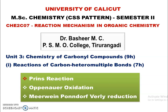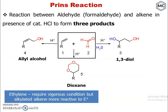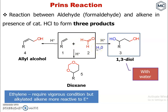The reactions covered are the Prins reaction, Oppenauer oxidation, and MPV reduction. The Prins reaction is a reaction between an aldehyde — specifically formaldehyde — and an alkene in the presence of a catalytic amount of hydrogen chloride (HCl). There are three possible products for this reaction.